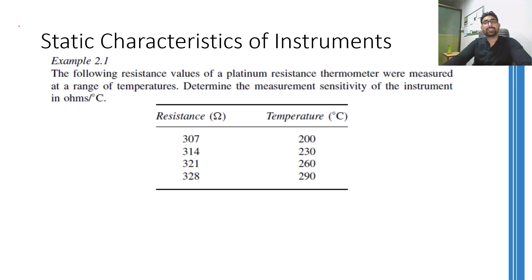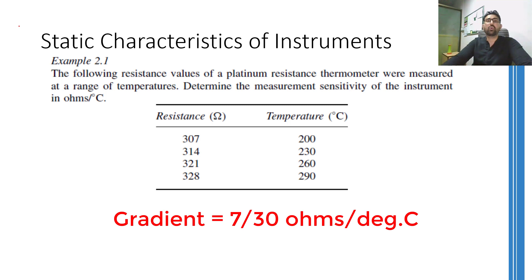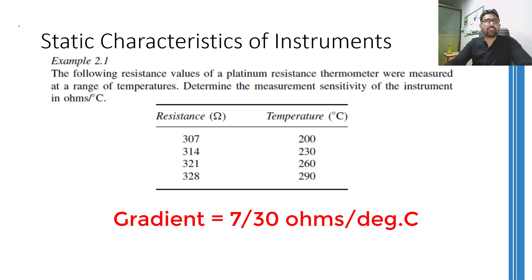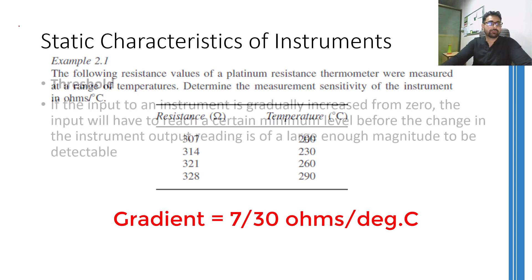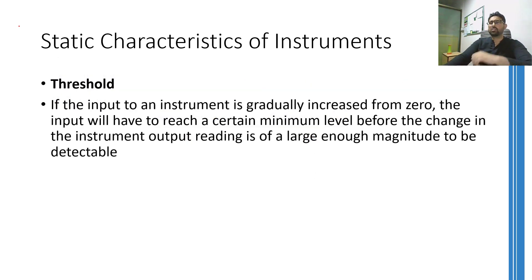In this case, the gradient would be 7/30 ohms per degree Celsius, and that would be the measurement sensitivity — meaning that for every 30-degree temperature change, the resistance is going to change by 7 ohms. This value can be found in the datasheet of any instrument, and you can easily figure out the amount of change in output the instrument is going to show for a change in input.